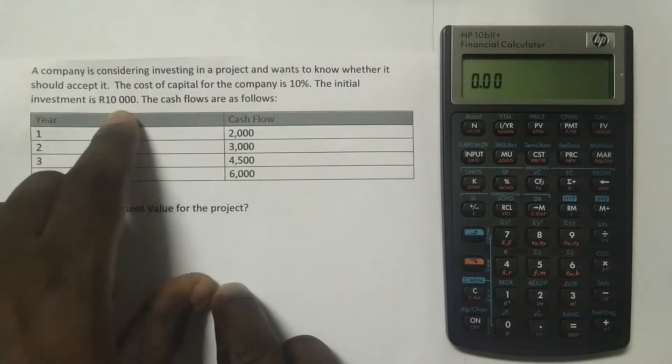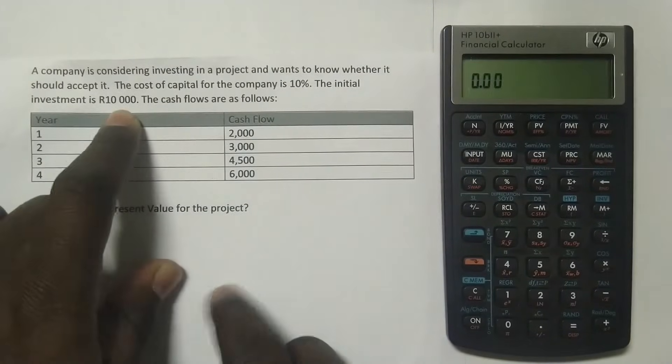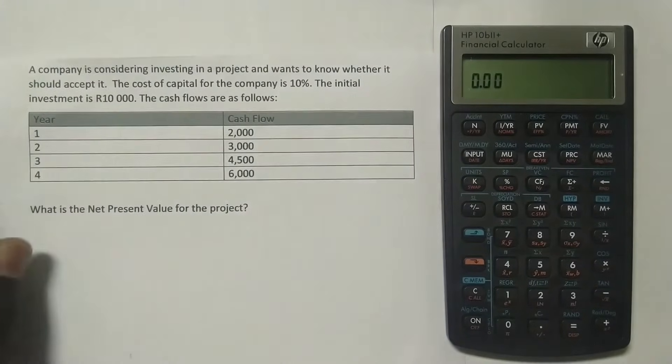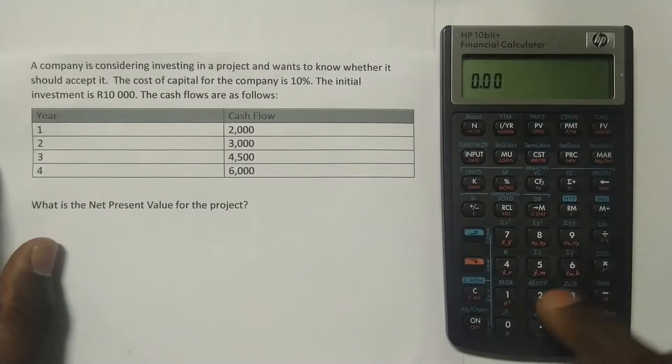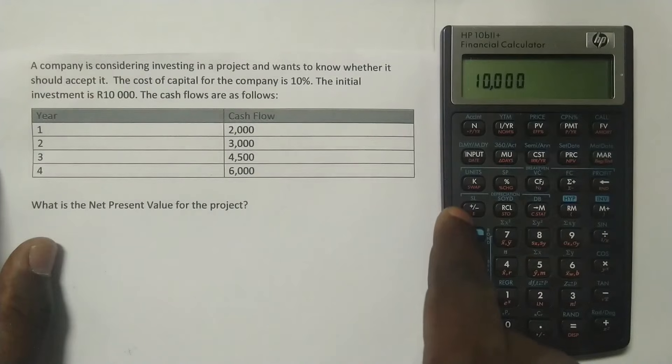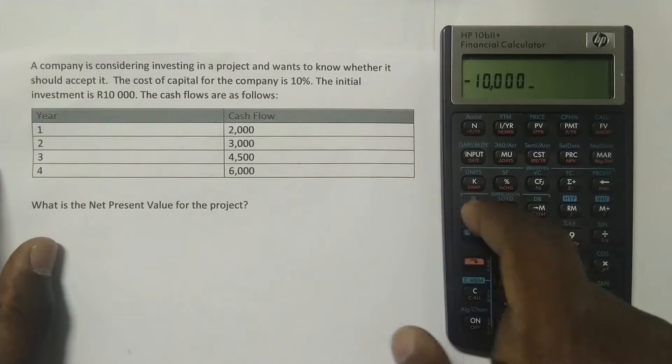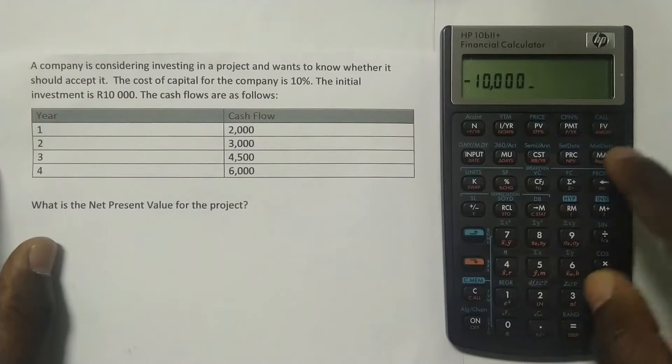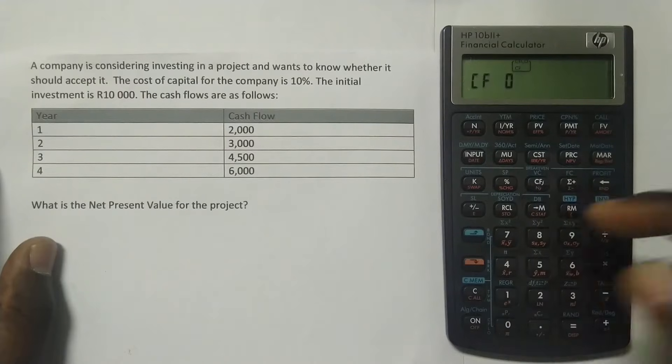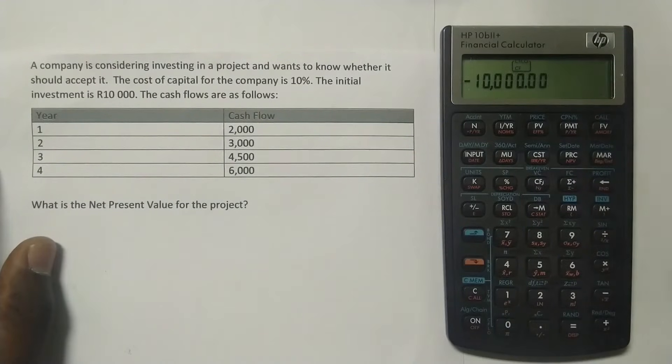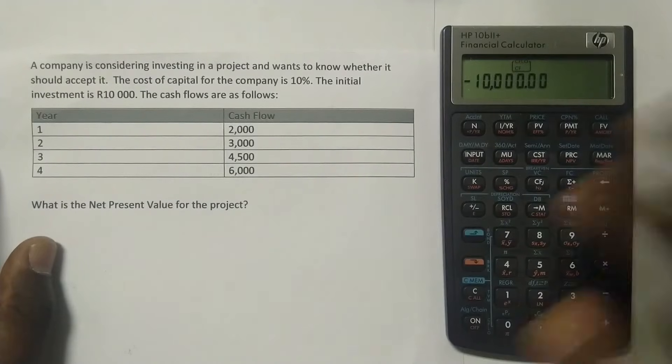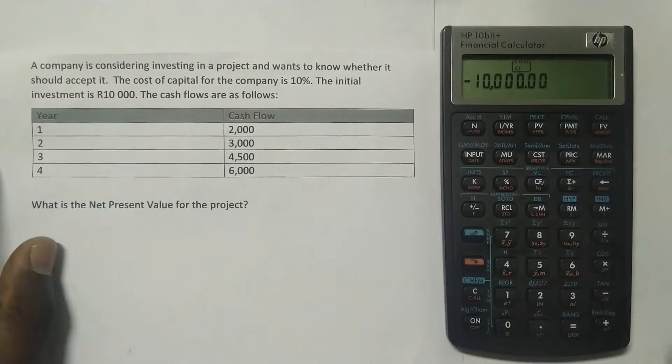So let's start with this one here. We know that the initial investment is put in as a negative because the initial investment is what you are paying out. So you press 10,000, and then for you to put the negative sign, you press here, it's written plus slash minus. Now it's negative, and then you press here, it's written CFJ, which stands for the cash flows, and it's the cash flow at year zero. Because you're putting, you're going to be paying this payment now. They're going to be paying this payment for the investment now.